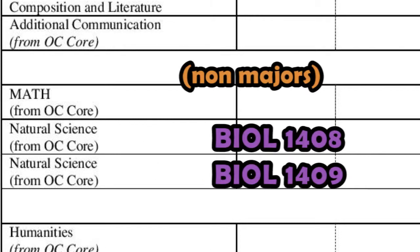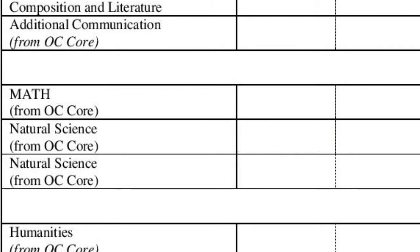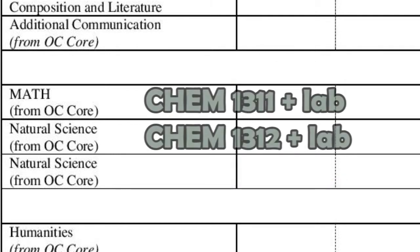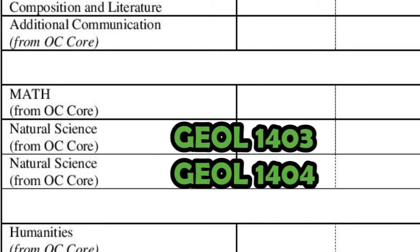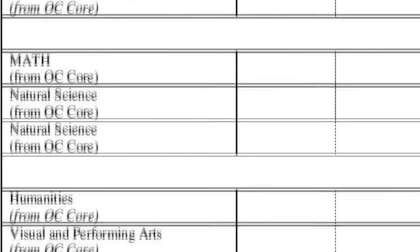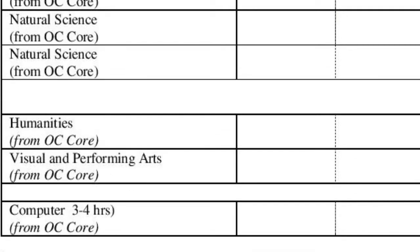Biology 1408 for non-majors and Biology 1409 for non-majors are preferred. However, you can take Chemistry 1311 with the lab and Chemistry 1312 with the lab, or Geology 1403 and Geology 1404.